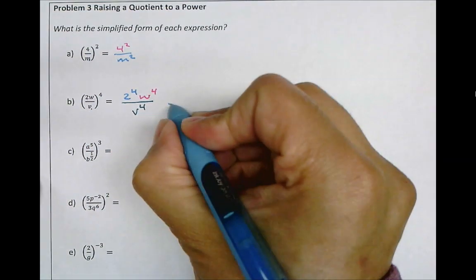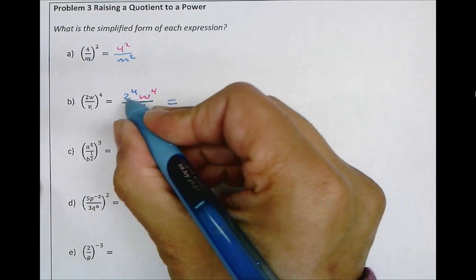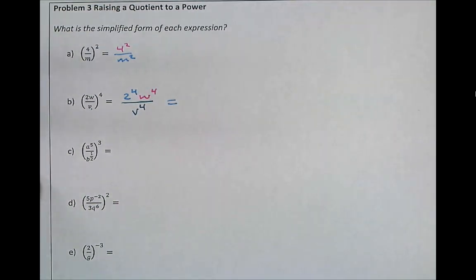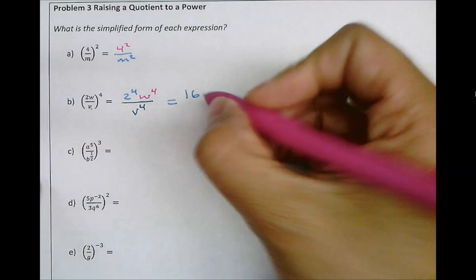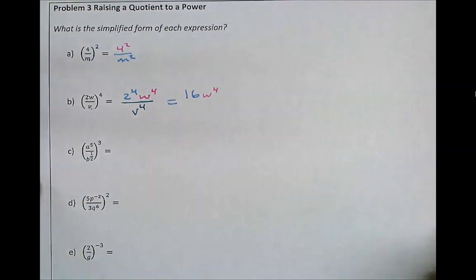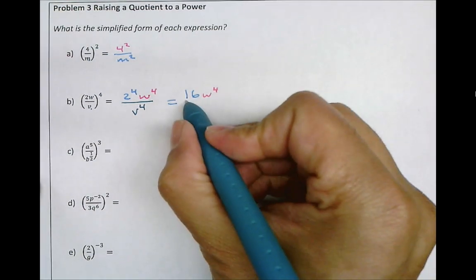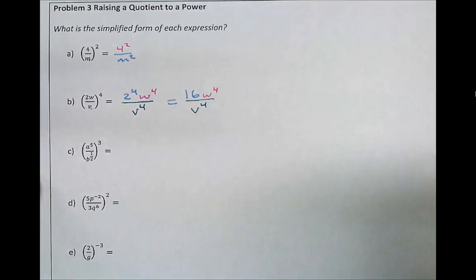We can simplify this further by simplifying the number part. So 2 to the power of 4, 2 times 2 times 2 times 2 is 16. And the rest remains as is, w to the power of 4 over v to the power of 4.